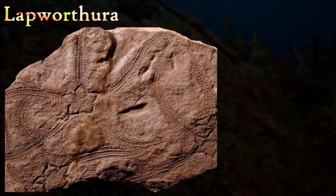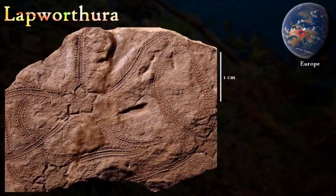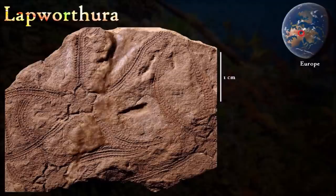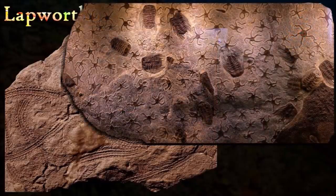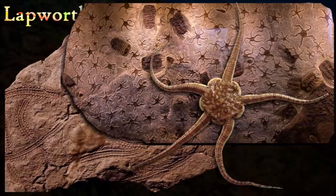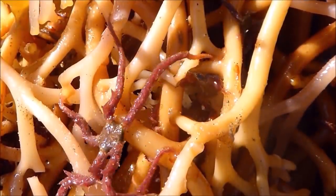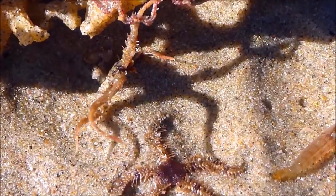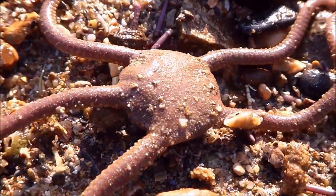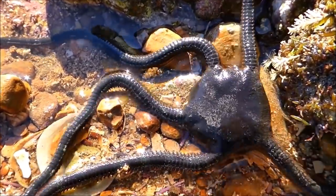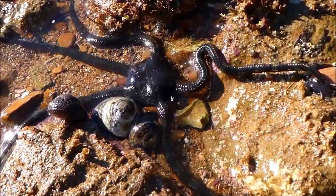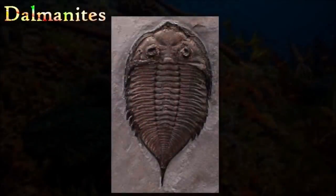Laporthyra was a brittle star with a large central disc; all of its body openings were located on the animal's lower surface, and its mouth was situated centrally. Laporthyra's arms bore calcareous plates known as ossicles, arranged in pairs opposite each other. Fossilization of brittle stars is usually dependent on the animal being buried alive by a sudden influx of sediment — for example, during a storm — as otherwise the soft outer skin decays and the ossicles separate and disperse. Like modern brittle stars, Laporthyra was probably a carnivore.